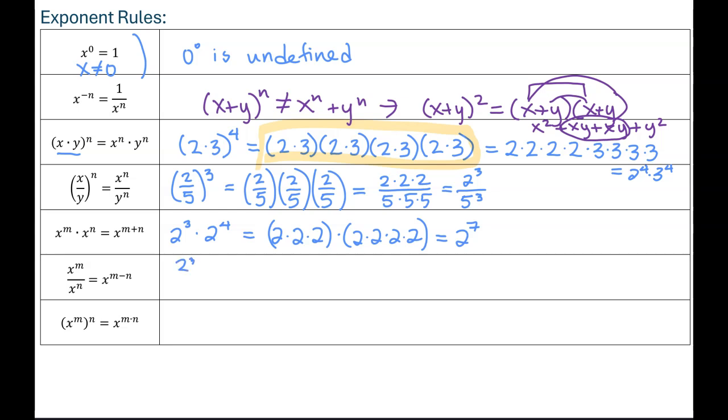Similarly, if we have two cubed over two to the fourth, that's two times two times two, and then four of them in the bottom. Here we can cancel. We can cancel a bunch of those twos out. Two divided by two is one. Two divided by two is one. Two divided by two is one. The one is really important because that means there's not a zero left on the top. There's not nothing on the top. You can't bring the two out of the denominator. There's a one left on the top and a two left on the bottom. And the rule says you should subtract powers. And that's true. If we do three minus four, we get two to the negative one, which is one half.